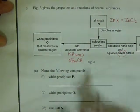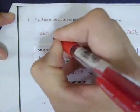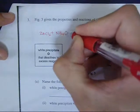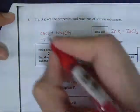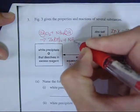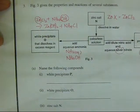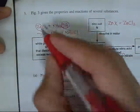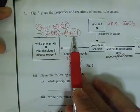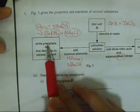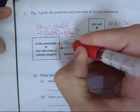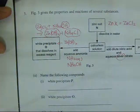When zinc chloride reacts with aqueous ammonia (ammonium hydroxide), you get zinc hydroxide and ammonium chloride. The white precipitate is zinc hydroxide, because ammonium chloride is soluble. All hydroxides are insoluble except those of Group 1 and Group 2 metals, so this white precipitate is zinc hydroxide.